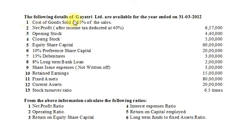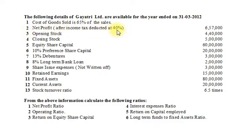The following details of Gayatri Limited are available for the year ended 31st March 2012. Cost of goods sold is 65% of the sales. Net profit after income tax deducted at 40% is Rs. 6,57,000. Opening stock Rs. 4,40,000. Closing stock Rs. 5,00,000.